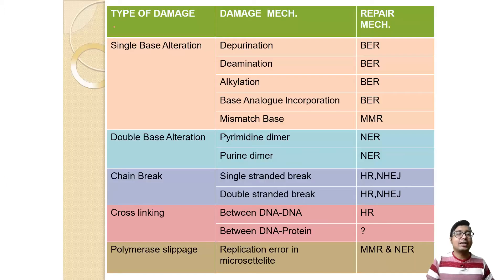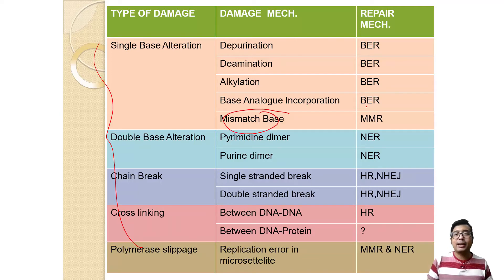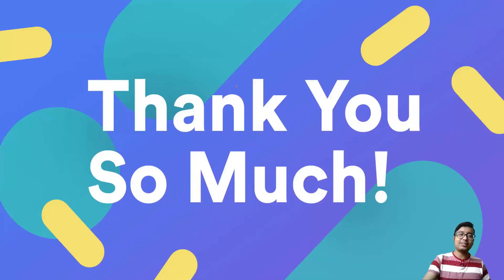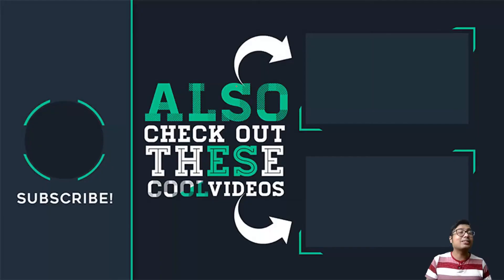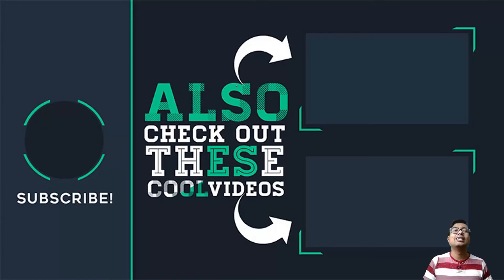So this is our end goal — we will be discussing each mechanism shown here. Right now we have studied mismatch repair, which is characteristic of single base alteration. I thank you and feel free to get back to me with any queries in the comment section. I will see you soon with the next series of this video. Till then, bye and take care.